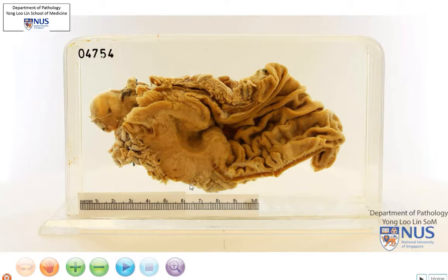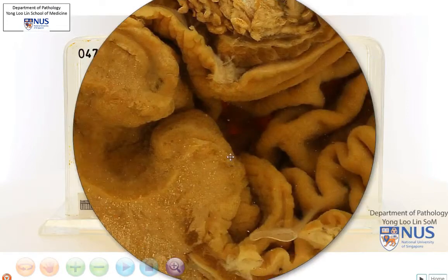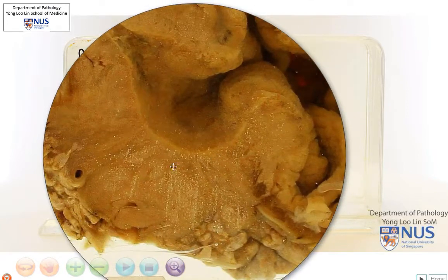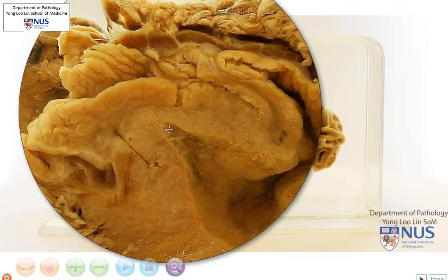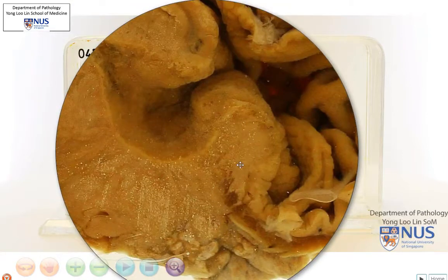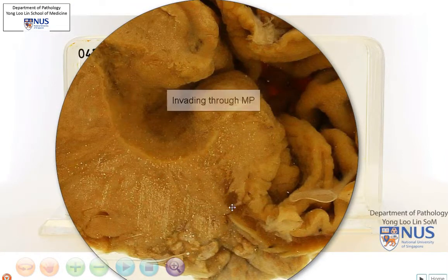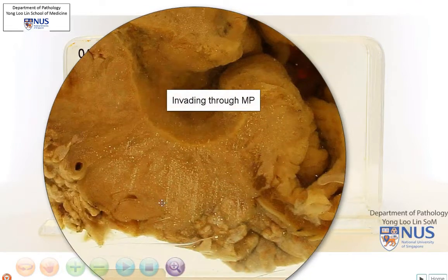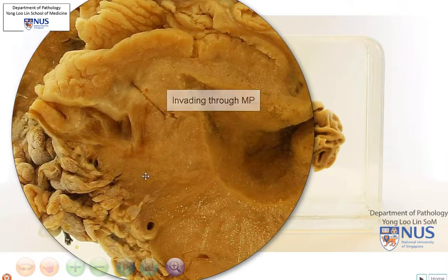We have a large fleshy ulcer at the antral region. The cut surface is pale tan and shows a rather smooth appearance, and we can see that the mass is actually invading through the muscularis propria right down into the subserosal fatty tissue.